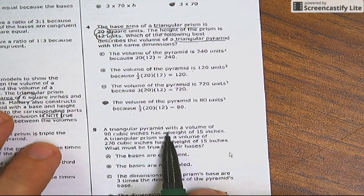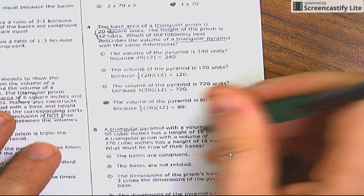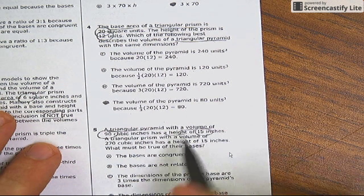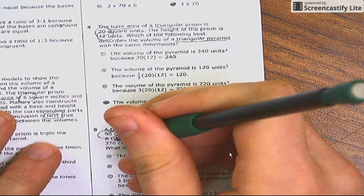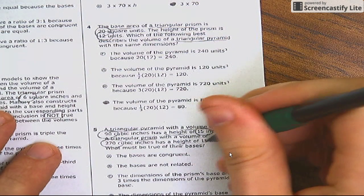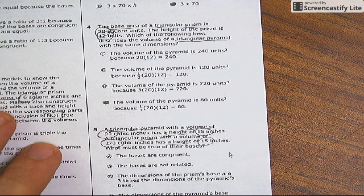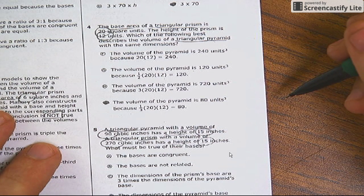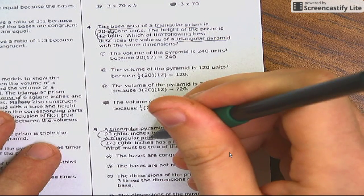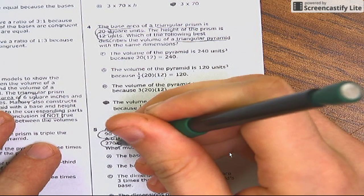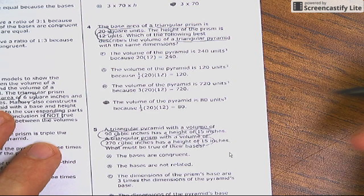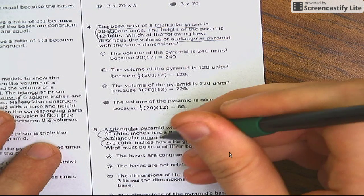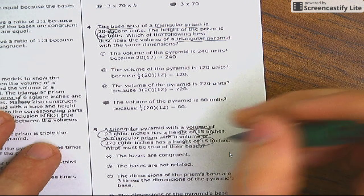A triangular pyramid, number five, with a volume of 90 cubic inches has a height of 15 inches. A triangular prism with a volume of 270 cubic inches has a height of 15 inches. What must be true of their bases? Oh man, they don't have the same volume. Oh, but wait. This prism is three times bigger than that pyramid. If it's three times bigger than that pyramid and it has the same height, then they have to have the same bases.